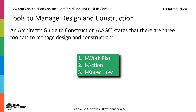An Architect's Guide to Construction by Brian Palmquist states there are three tool sets to manage design and construction. First, I-Work Plan — a traditional work plan, also called work breakdown structure, is simply a list of all of the key processes and procedures involved in design and construction. Second, I-Action describes the integrated set of transient communications that capture I-Work Plan work products and deals with emergent issues. Third, I-Know-How encompasses the experience, expertise, and knowledge database that each designer and builder need to assemble in order to evolve, become efficient, and more competitive.